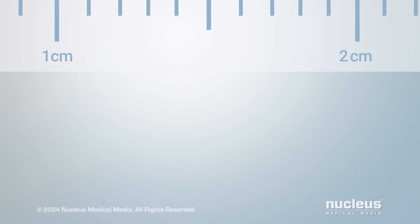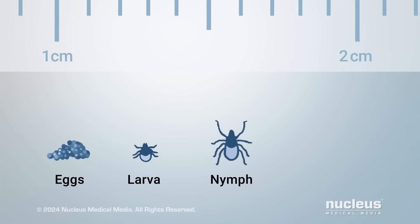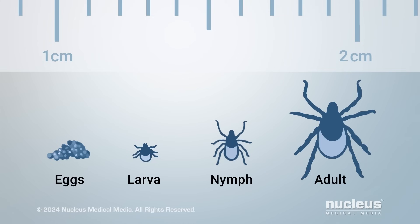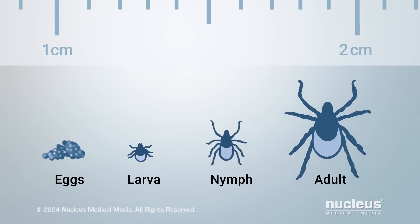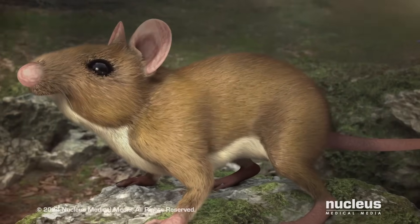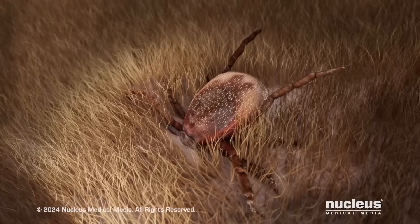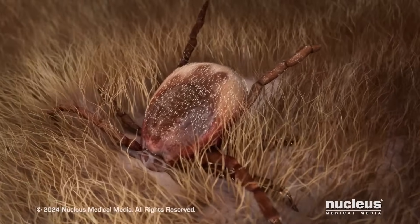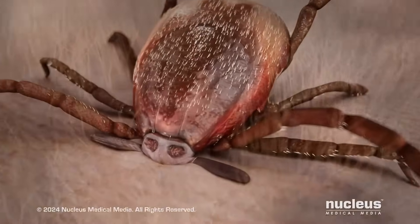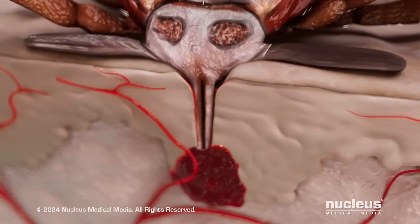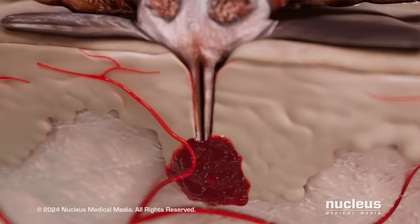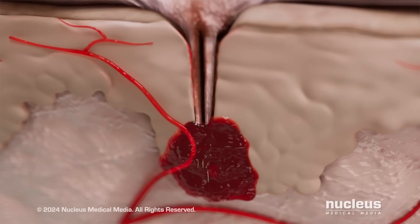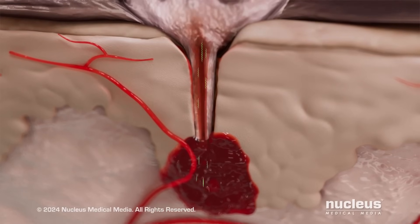Ticks have four life stages: an egg, a six-legged larva, an eight-legged nymph, and an adult. To survive and grow, a tick must eat the blood of a host animal at every stage of development. If the host animal is already infected with the bacteria, the tick can become infected when it feeds on the host animal's blood.